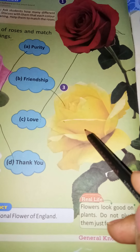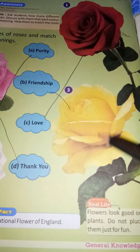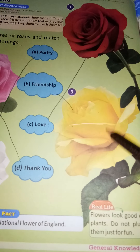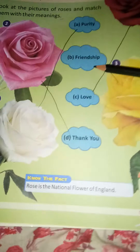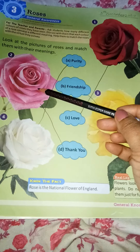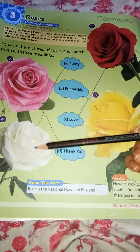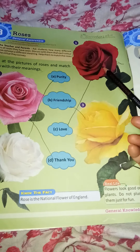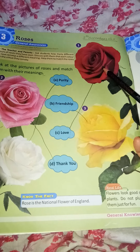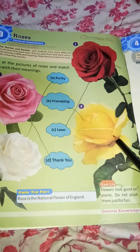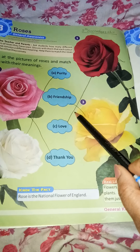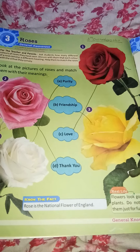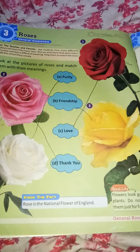This is a yellow flower. Yellow flower conveys the message of friendship. You have to match yellow rose flower with option B — friendship. So students: pink rose flower means thank you, white rose flower means purity, red rose flower means love, and yellow rose flower indicates friendship. If you want to make a friendship, you can give a yellow rose, because yellow rose indicates friendship.